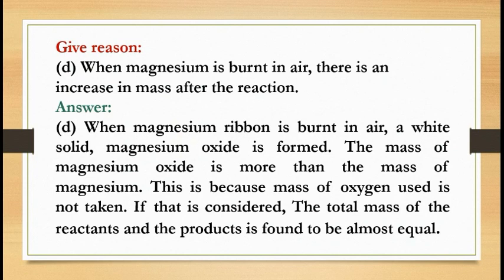B: When magnesium is burnt in air, there is an increase in mass after the reaction. Answer: When magnesium ribbon is burnt in air, a white solid magnesium oxide is formed. The mass of magnesium oxide is more than the mass of magnesium. This is because the mass of oxygen used is not taken into account. If that is considered, the total mass of the reactants and the products is found to be almost equal.